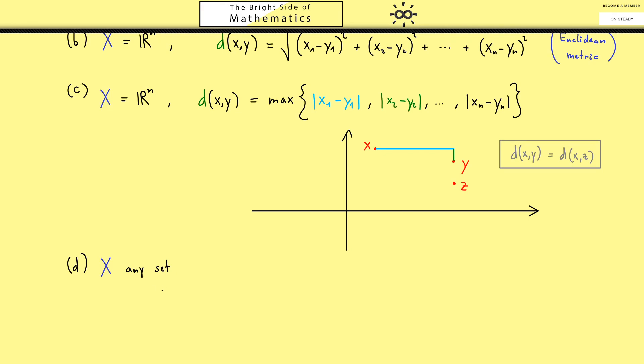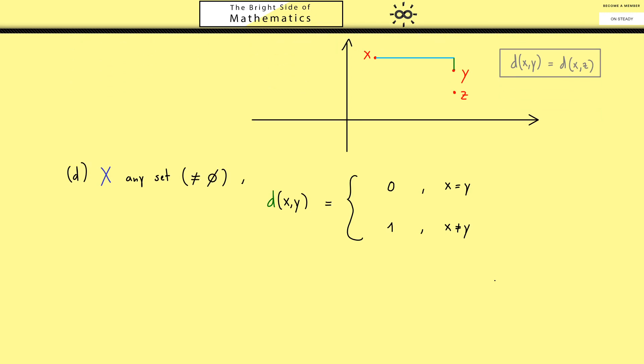For our last example here let's choose a more abstract one, just any set X, which should not be the empty set. Then we define a metric by distinguishing two cases. The first case is just X is equal to Y and the second of course X is not equal to Y. By the first property of the metric we already know, here we need a zero. However, we are not allowed to have a zero here, so we can choose whatever we want and most of the time we just choose one. So let's check together that this is indeed a metric.